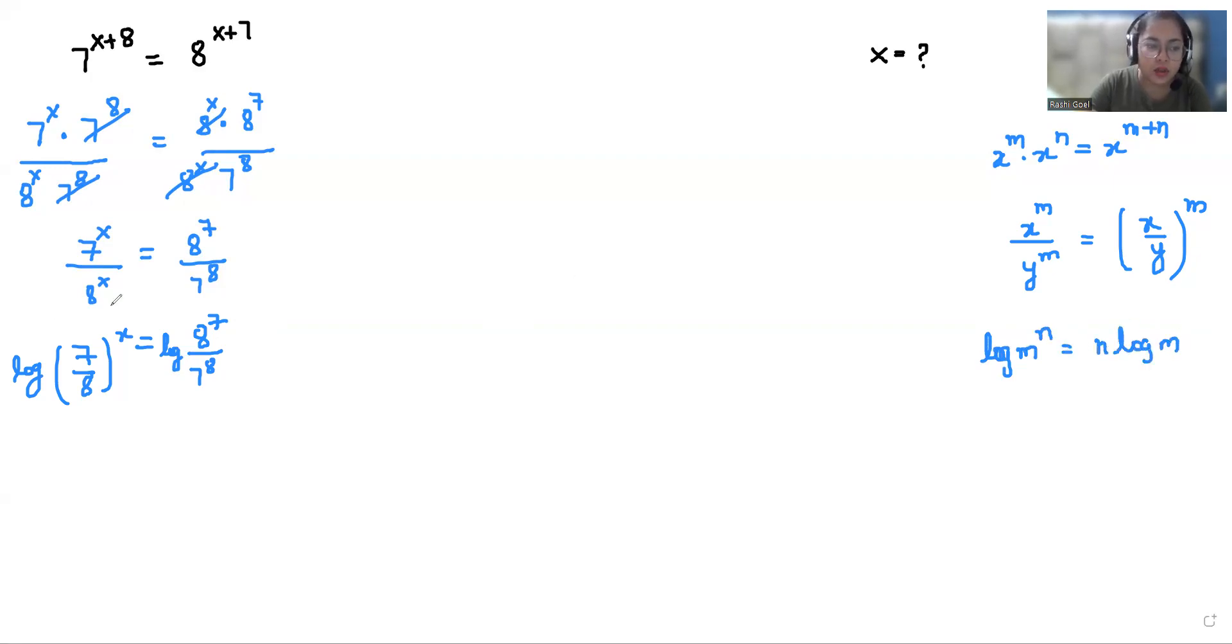using the property log(m^n) = n·log(m), we can write x·log(7/8) equals log(8^7 / 7^8).